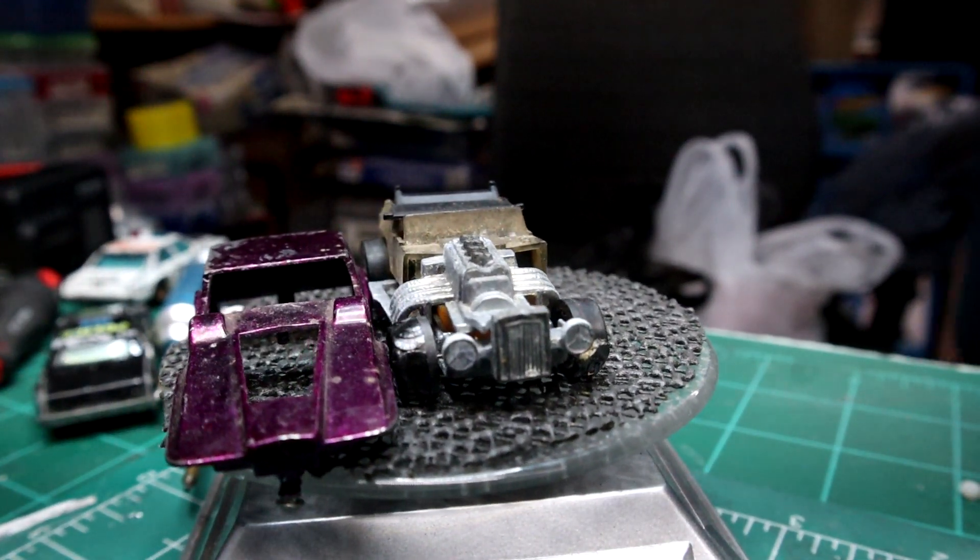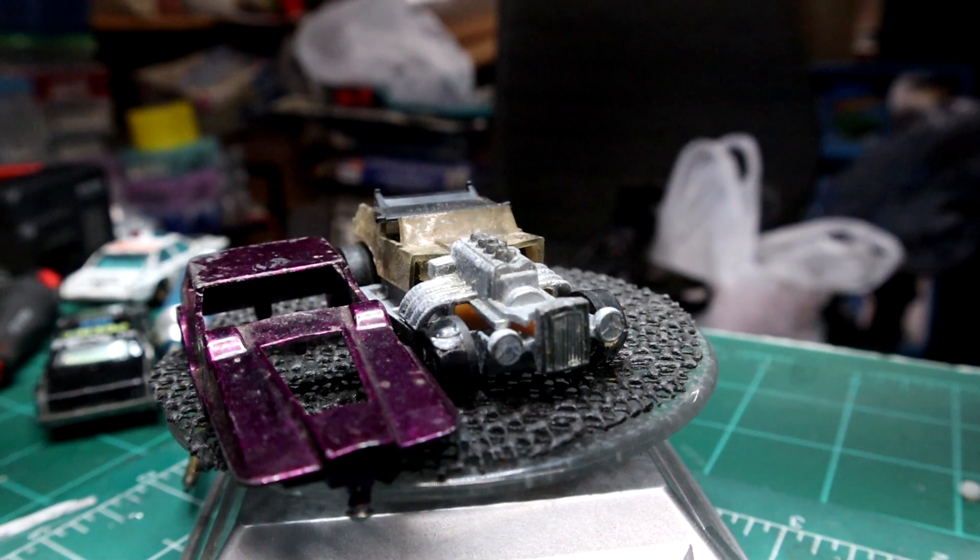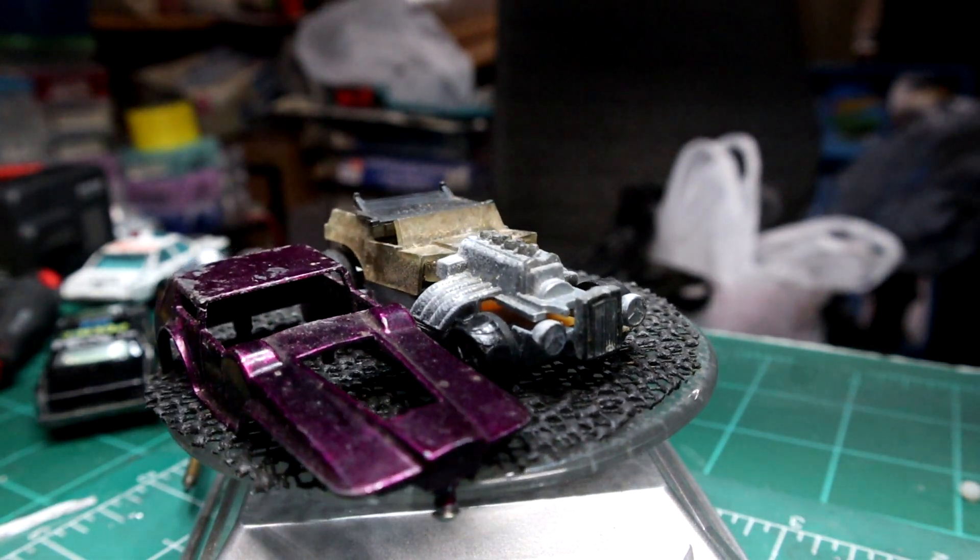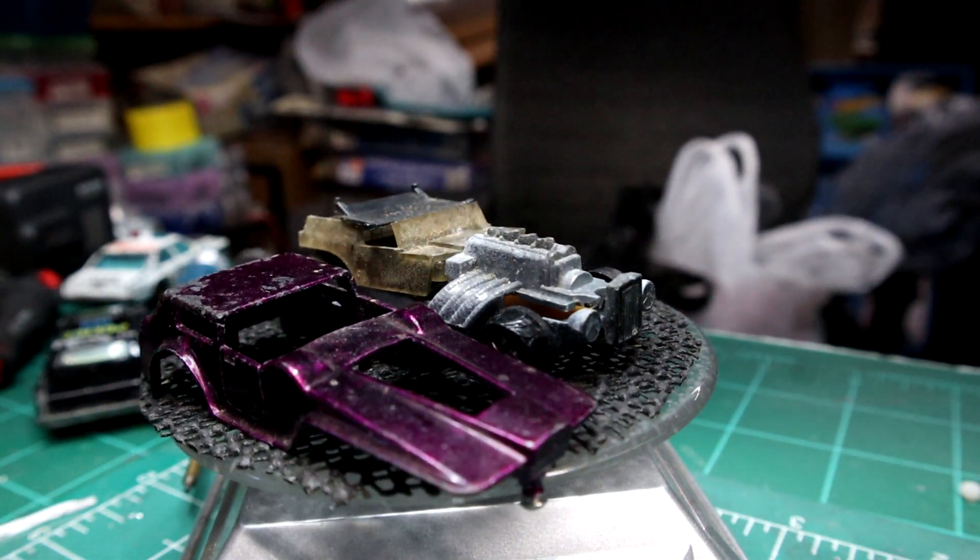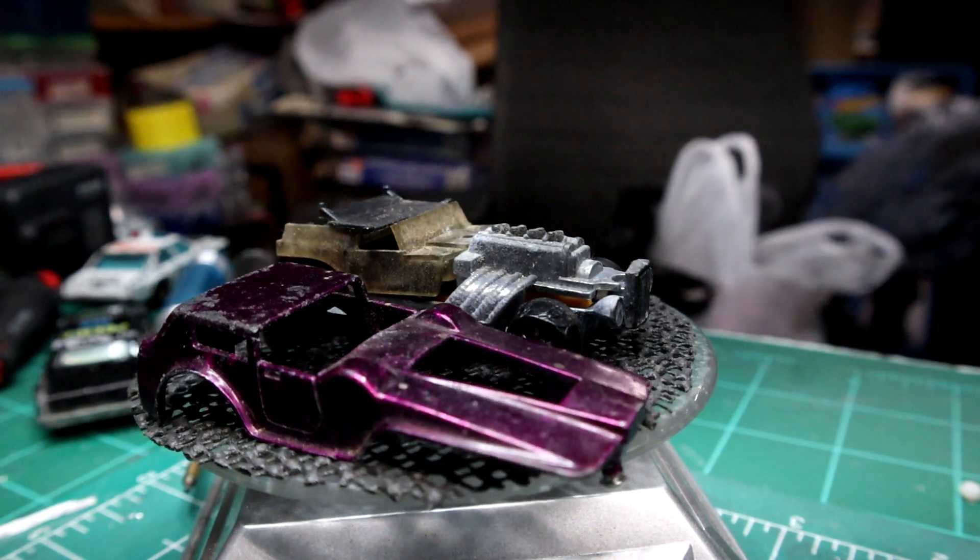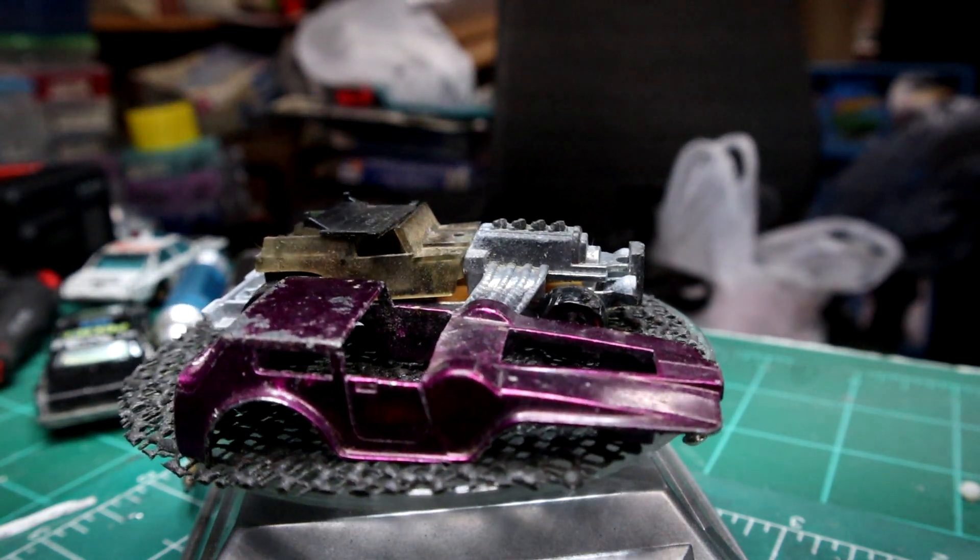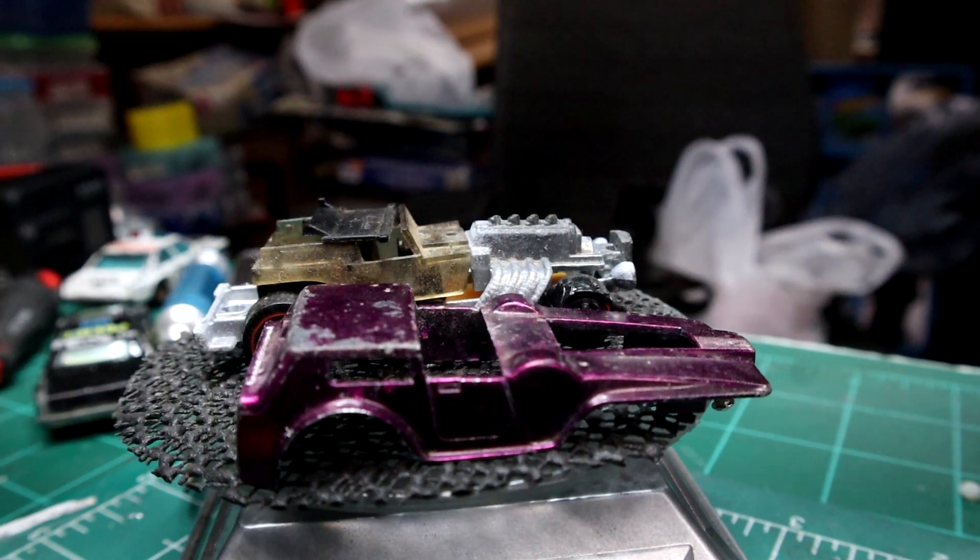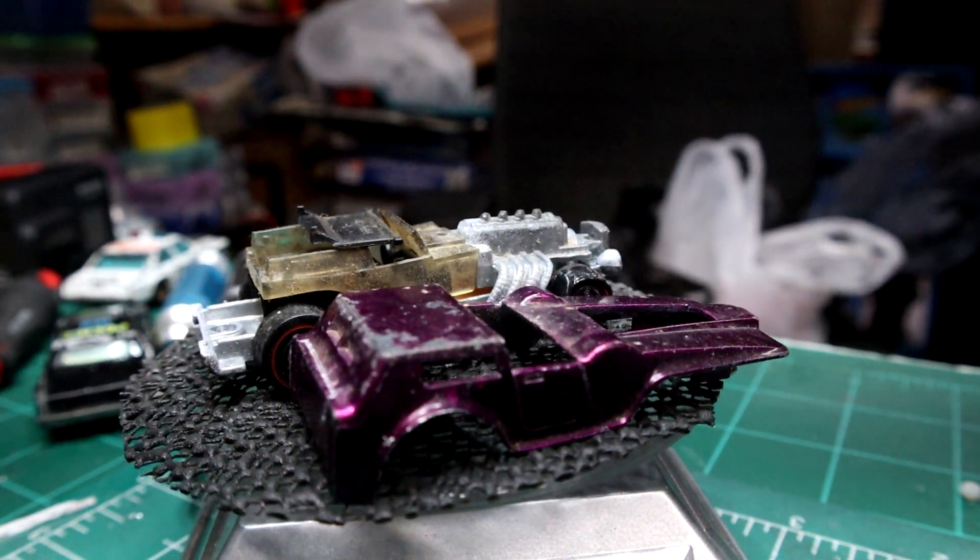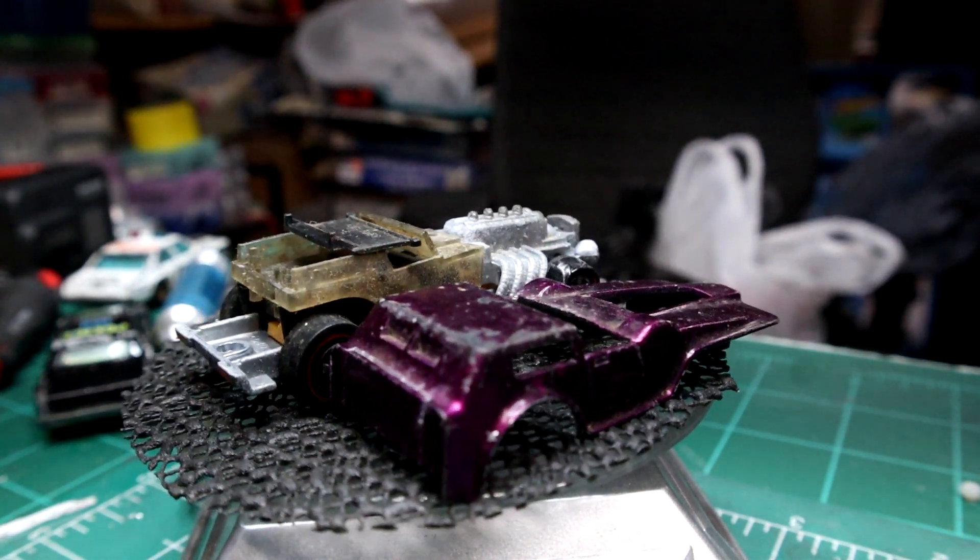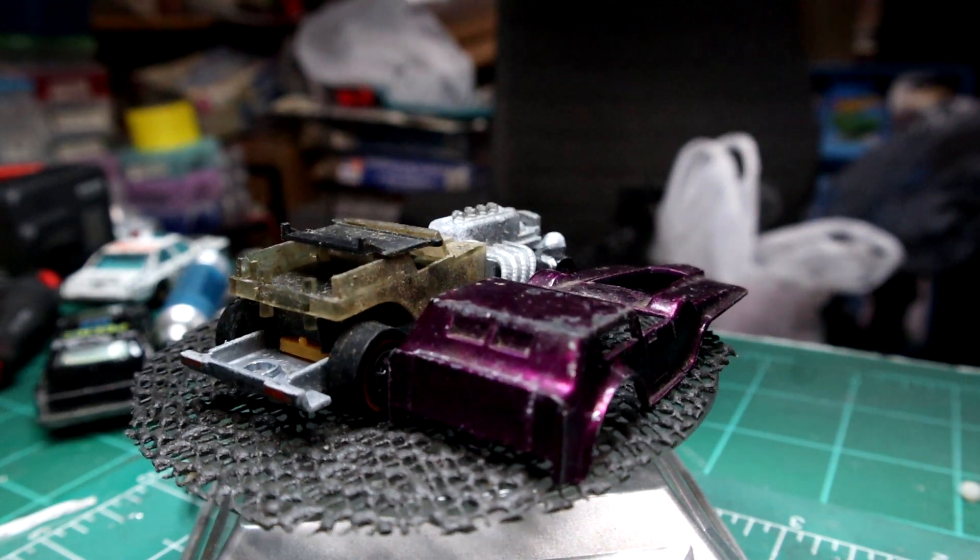Now just a reminder of what we started out with. It was the purple magenta color, very play worn. A lot of oxidation on the base and the motor. The roof was terrible. The tires needed changing out.